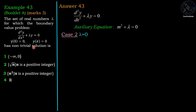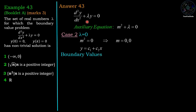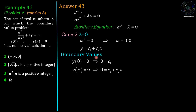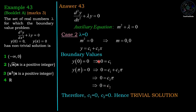Case 2: λ = 0. Then m = 0 (repeated), giving y = c₁ + c₂x. Applying y(0) = 0 gives c₁ = 0. Applying y(π) = 0 gives c₂π = 0, so c₂ = 0. Again only the trivial solution, so λ = 0 yields no non-trivial solution.